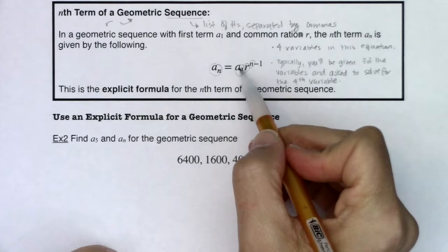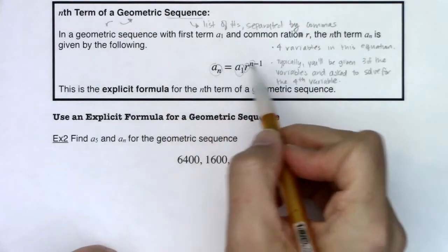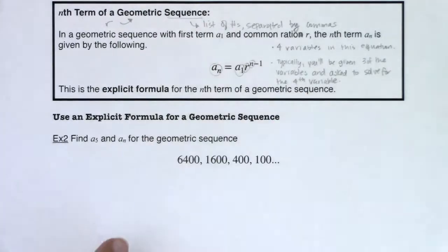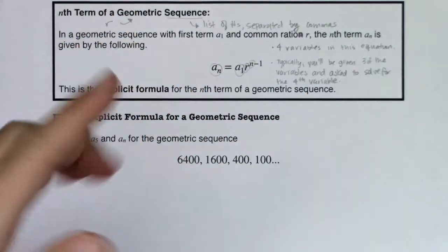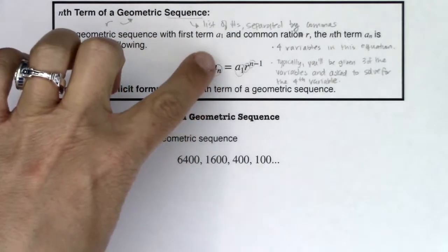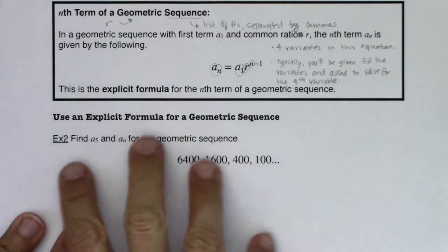There will be times when you're only given two, a sub 1 and R, and you're asked to find the explicit formula, meaning you would still have an n in your answer. But if not, if it's not the kind where it says find a sub n, then you're actually going to be given three of these four variables and solve for the fourth one.